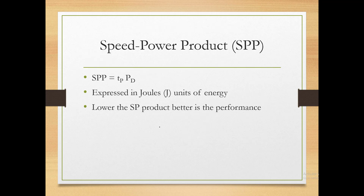To compare ICs, we use the speed-power product: propagation delay multiplied by power dissipation. This gives a single metric — the lower the speed-power product, the better the IC performance.